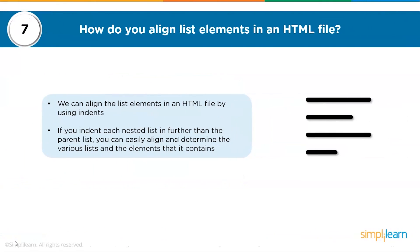The seventh question: how do you align list elements in an HTML file? We can align list elements in an HTML file by using indents. If you indent each nested list further than the parent list, then you can easily align and determine the various lists and the elements they contain.